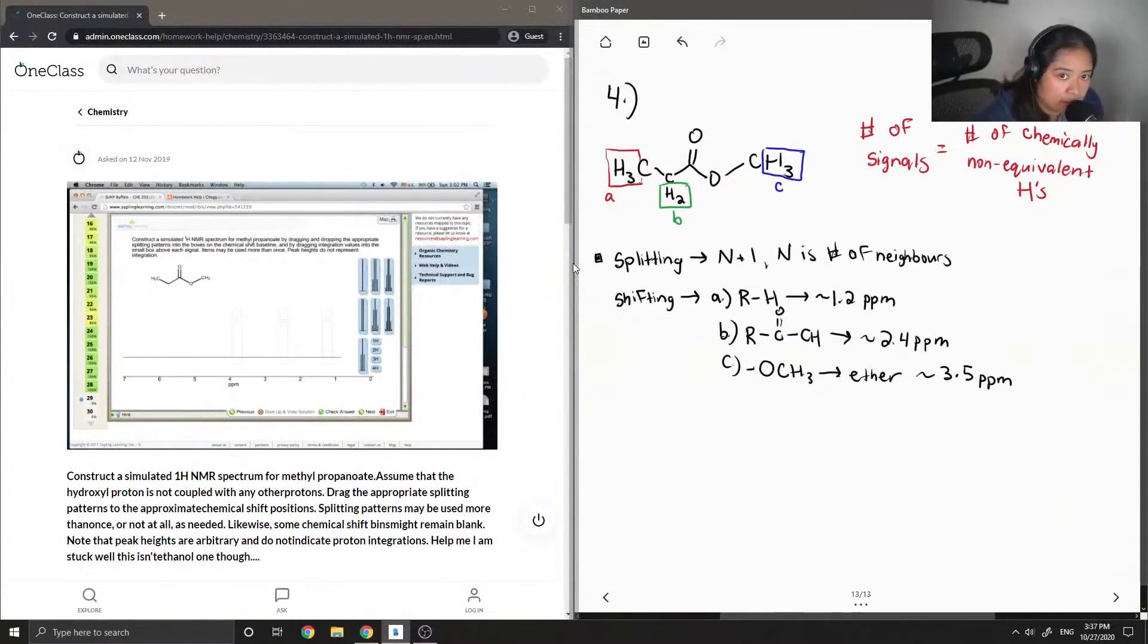So let me draw out just a rough HNMR spectra. Give myself some space. And I'm going to start at 4 because that's just where everything takes place. This is ppm.